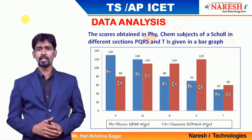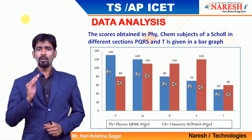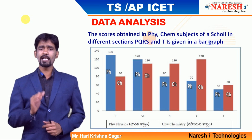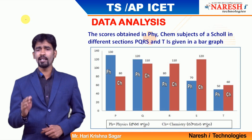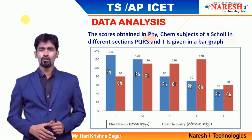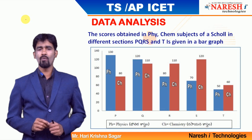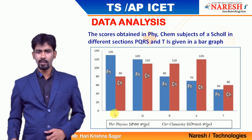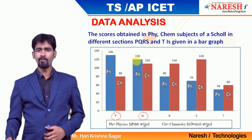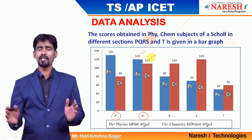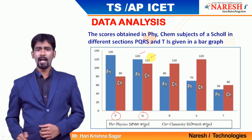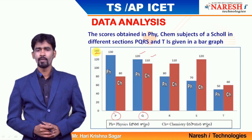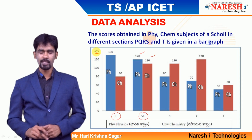Let me project the question from the previous paper. The scores obtained in physics and chemistry for sections P, Q, R, S, and T are given in the bar graph. Section P: physics 130, chemistry 80. Section Q: physics 120, chemistry 110 — and so on. The maximum score is 140. PH indicates physics and CH indicates chemistry.